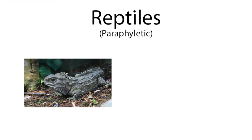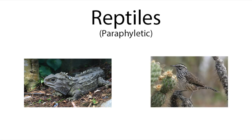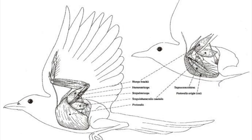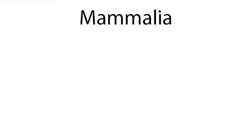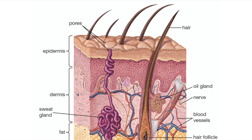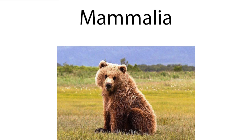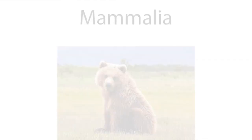On to group six, where we have the reptiles — and yes, this includes birds. Some would say flight, because the avian reptiles have figured this one out with help from their pneumatized bones, continuous breathing, and new bone structures. Here's the mammals taking up the rear as group seven, who have evolved hair follicles and are now mostly fuzzy, with a bunch of new sweat glands too.